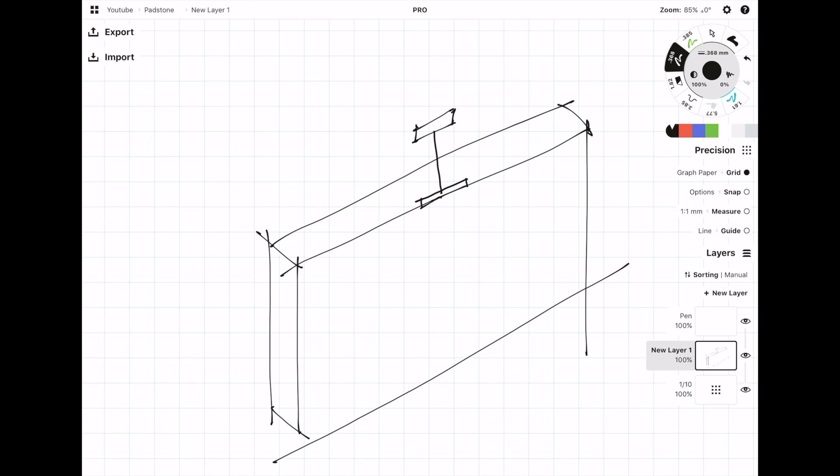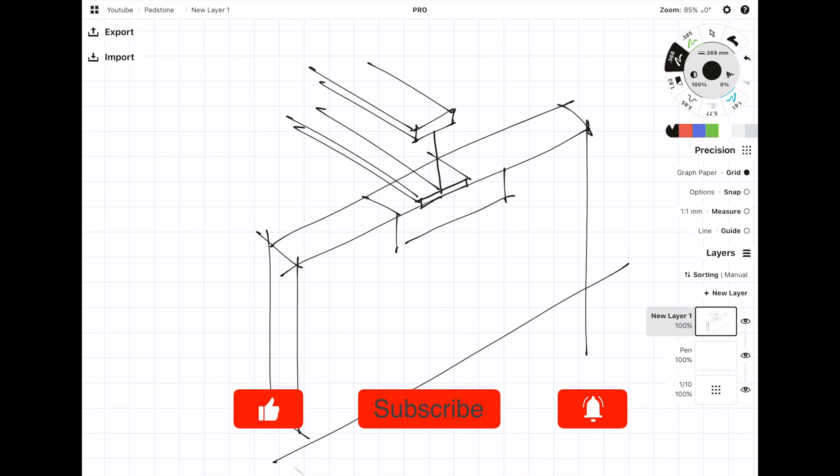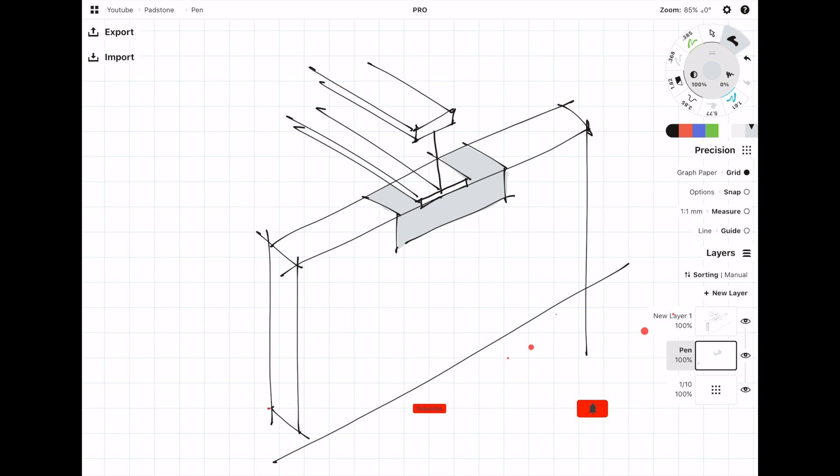So what is a padstone? Well a padstone is essentially a spreader for a steel beam or a lintel and like the name suggests it's there to spread the load so that the concentrated load is spread over a longer distance so that it doesn't crush the masonry.